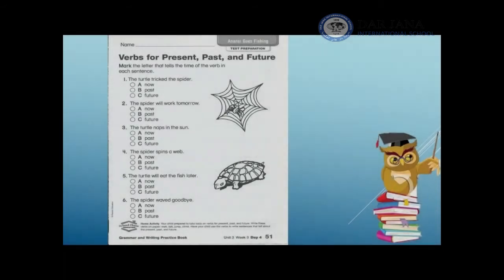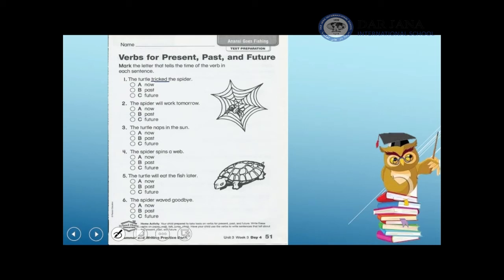Let's look at this page: Verbs for present, past, and future. Mark the letter that tells the time of the verb in each sentence. Number one: 'The turtle tricked the spider' — is this sentence referring to now, past, or future? I have to figure out the verb first. The turtle is the subject. I have 'tricked' with 'ed' added to the verb, therefore I choose past.